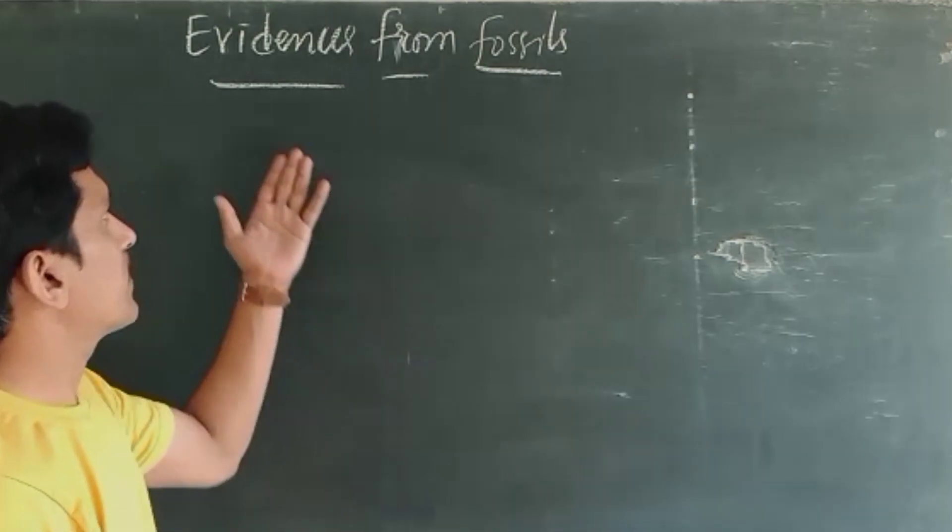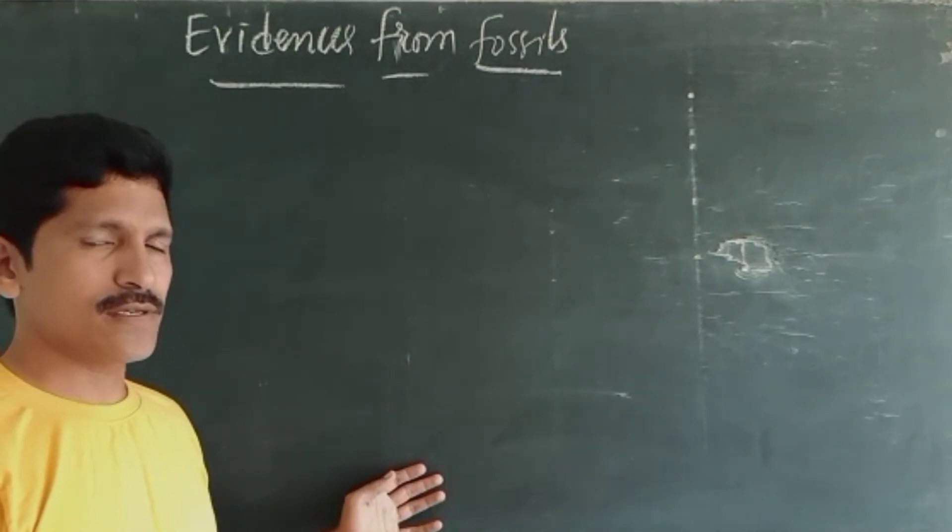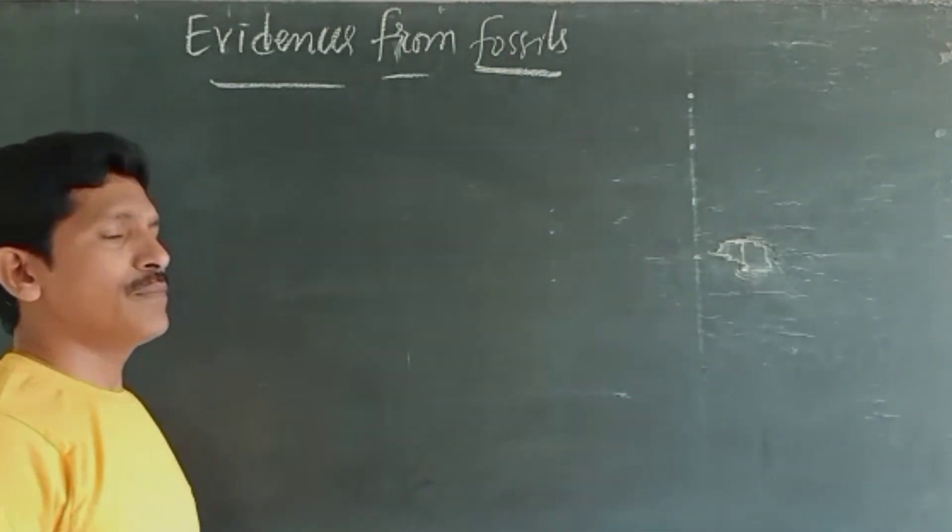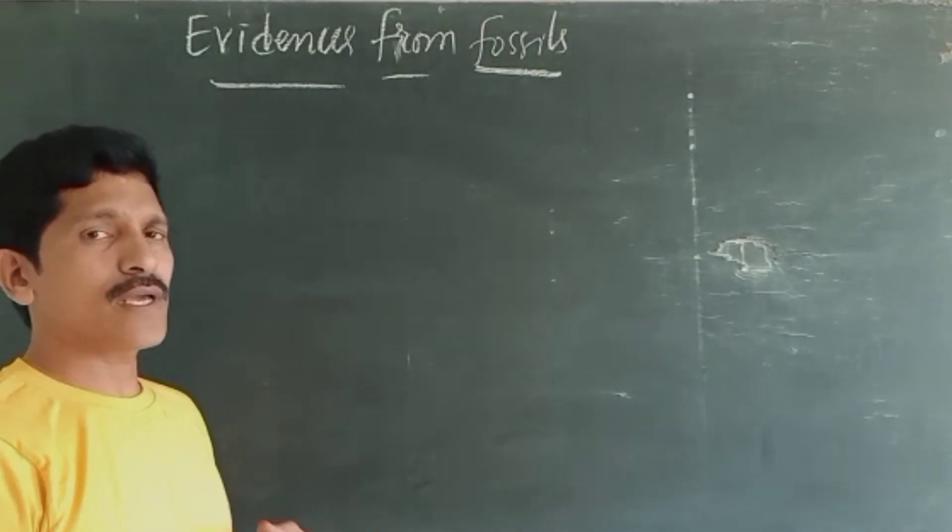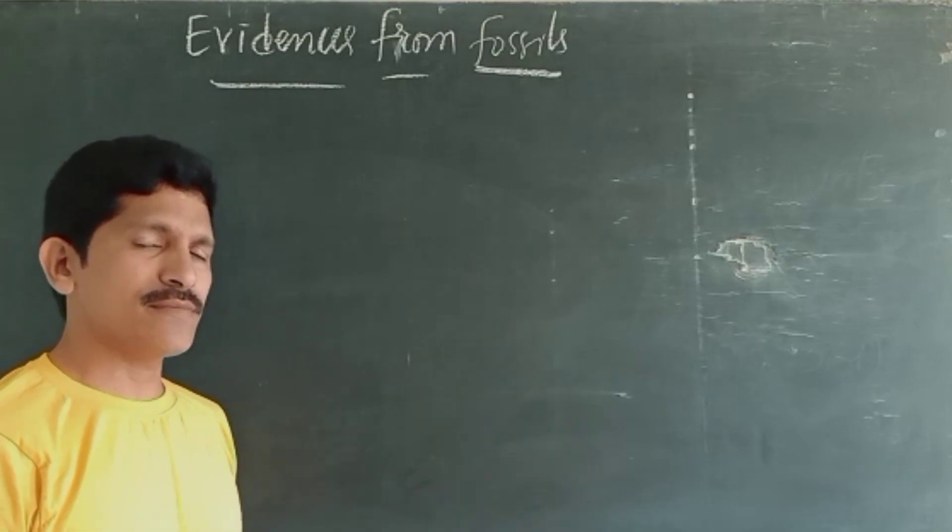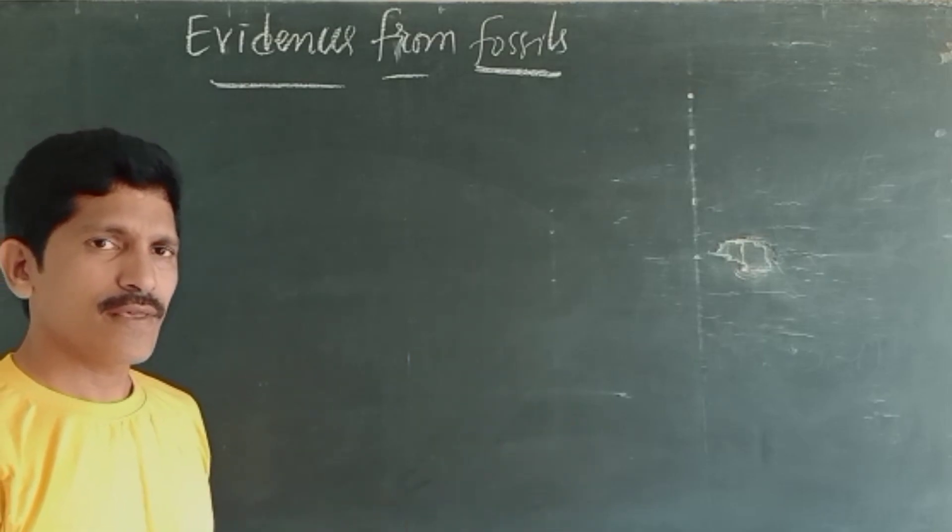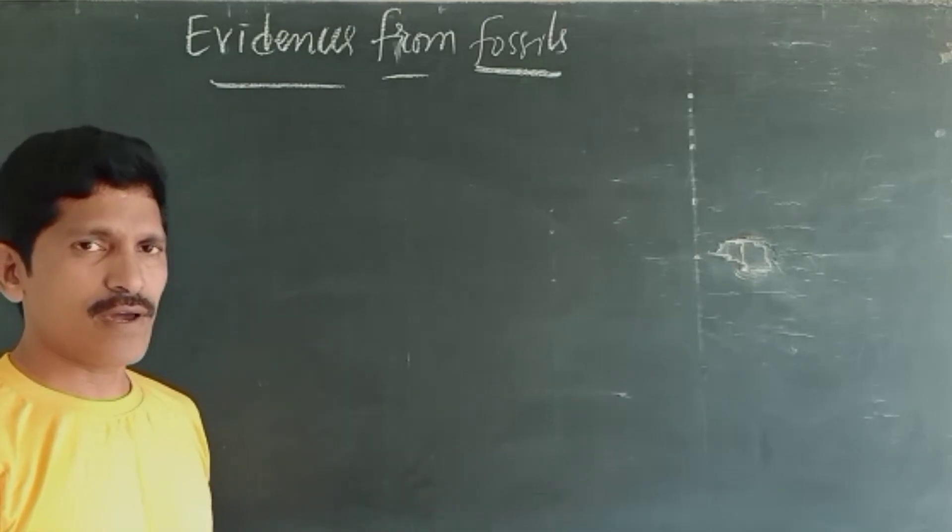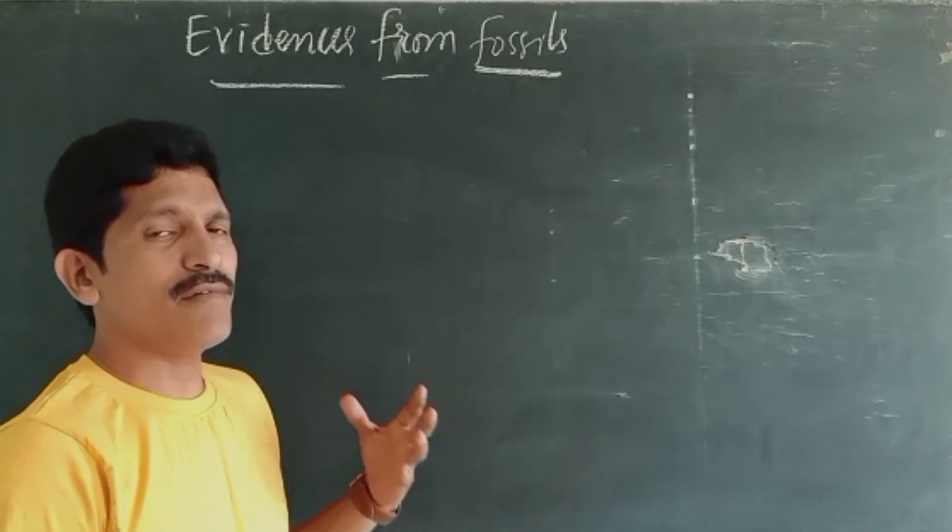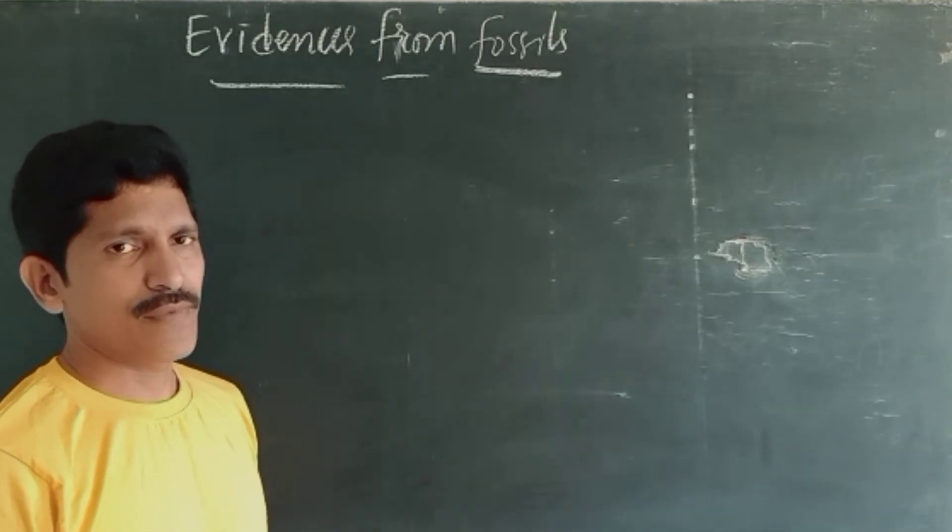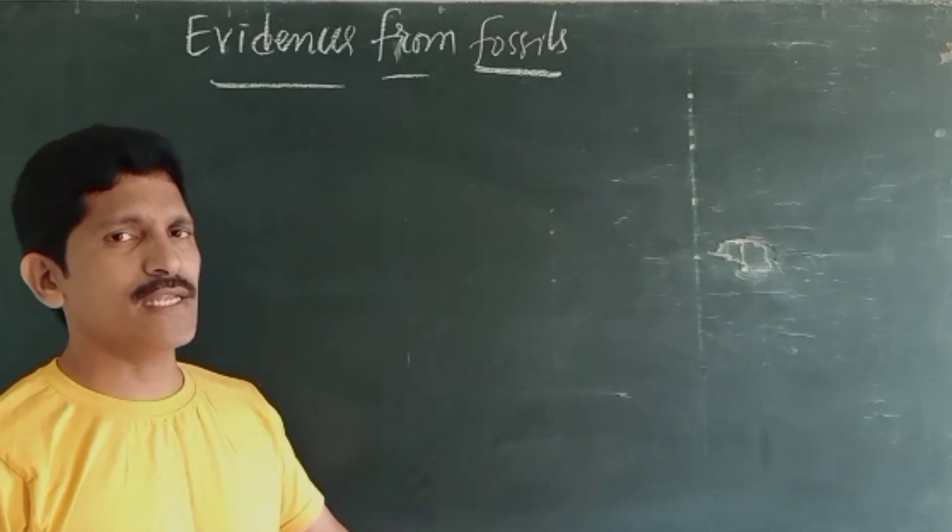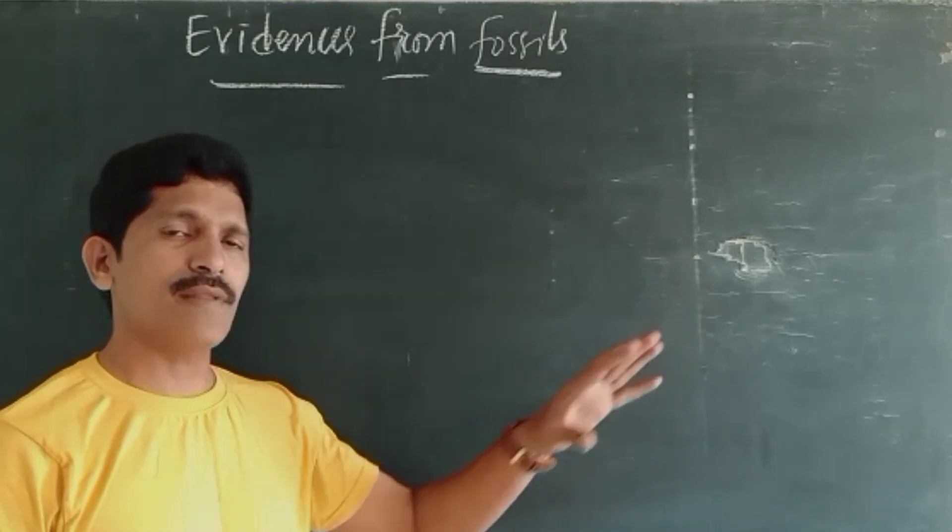We are going to discuss the evidences from fossils and what are fossils. Fossils are the proofs which organisms left behind. Once upon a time these organisms were living on the surface of earth and now they are not surviving, not even one in number. But they have left some evidences that prove based on the proofs only we can easily estimate that organisms once upon a time lived.